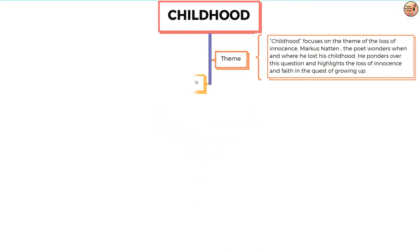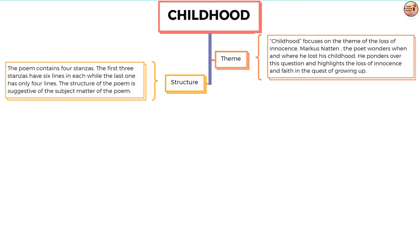The structure of the poem Childhood by Marcus Nathan contains four stanzas. The first three stanzas have six lines in each while the last one has only four lines. The structure of the poem is suggestive of the subject matter of the poem. It is a subjective poem.